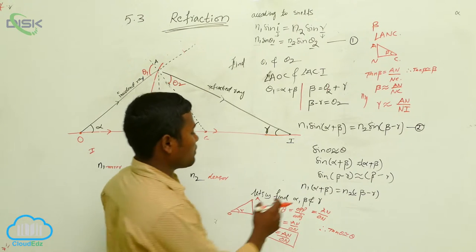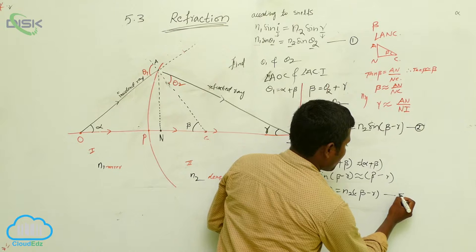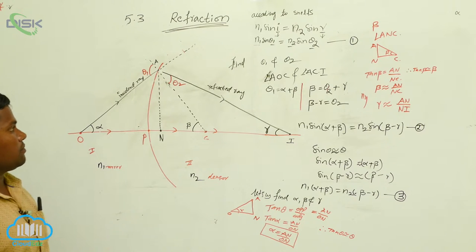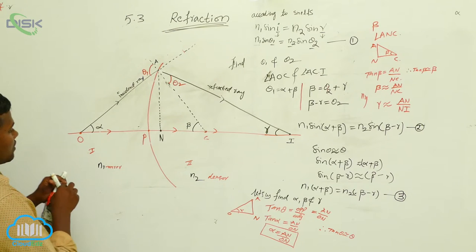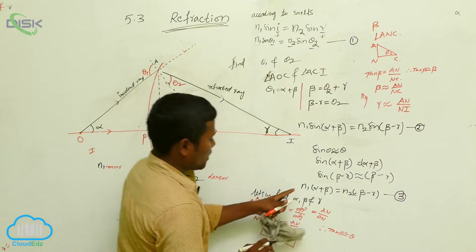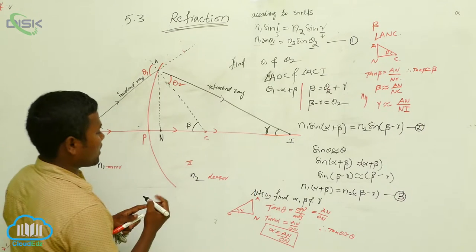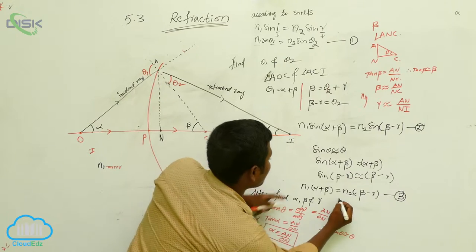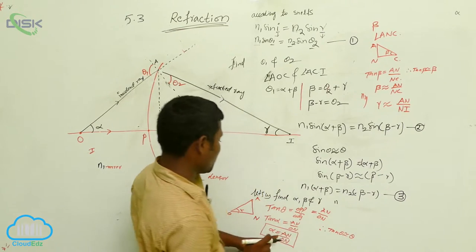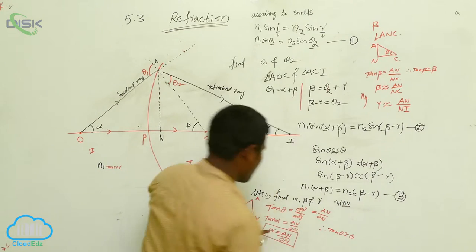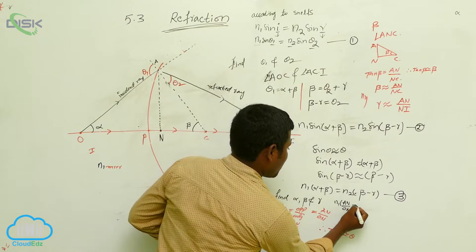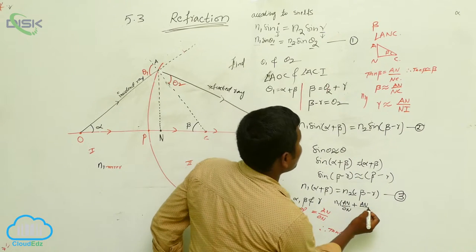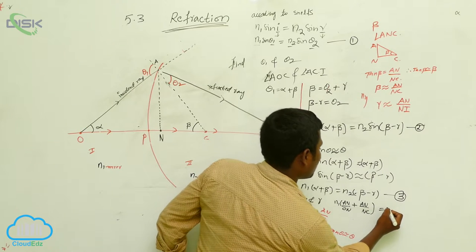These values — alpha, beta, and gamma — I have to substitute in equation number 3. Now I am going to write: N1 times alpha, where alpha is AN by ON, plus beta, where beta is AN by NC, equals N2 times beta, which is AN by NC.